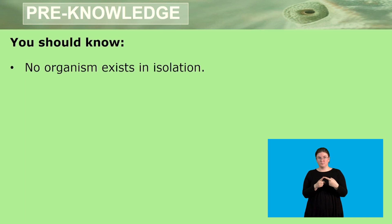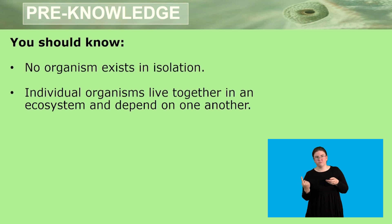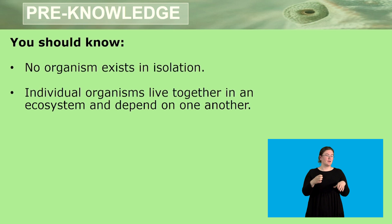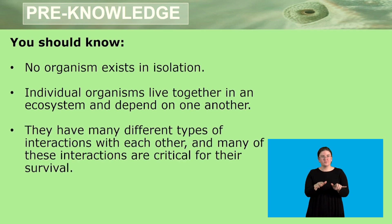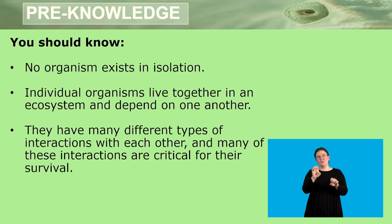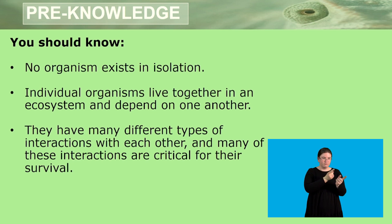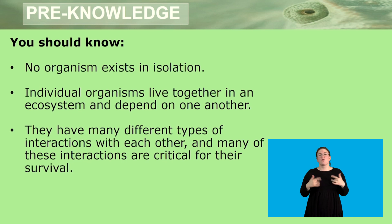You are supposed to know that no organism exists in isolation. All individual organisms such as plants, animals and humans live together in an ecosystem and they depend on one another. There are different types of interactions with each other and many of these interactions are critical for survival, as we will see when we learn about microorganisms in today's lesson.